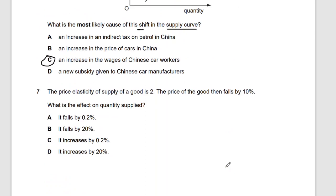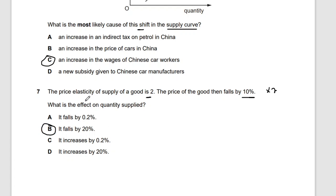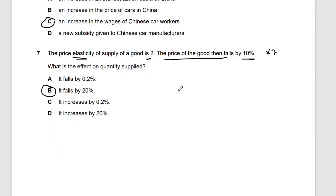Question seven: the price elasticity of supply for a good is two. The price then falls by 10%. What is the effect on quantity supplied? PES = 2 means if price changes by 10%, quantity supplied responds by 2 × 10% = 20%. Since price falls, quantity supplied also falls by 20%. We also know from the law of supply that a reduced price leads to reduced supply.